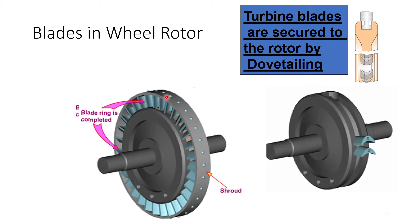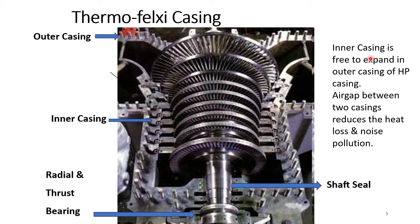The rotor is made of a number of wheels connected on a shaft. On the shaft there is a circular wheel called a hub. On the hub, each blade is inserted one by one and then finally it is sealed. The blades are interconnected with a shroud to give stiffness. The blades are secured to the rotor by a procedure called dovetailing, which is shown on the extreme top right hand side.